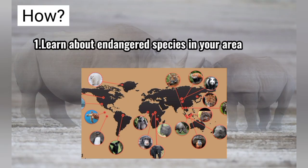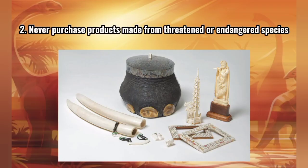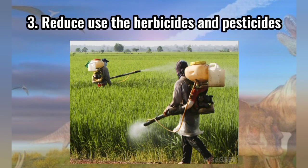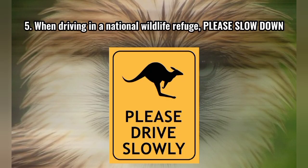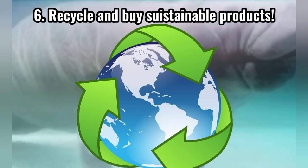How we can help them? How we can give our love? Number one, learn about endangered species in your area. Number two, never purchase products made from threatened or endangered species. Number three, reduce use of herbicides and pesticides. Number four, protect wildlife habitat. Number five, when driving in a national wildlife refuge, please slow down. Number six, recycle and buy sustainable products. Humanity can save animals or allow them to become extinct — we have the power to decide. It's our choice.